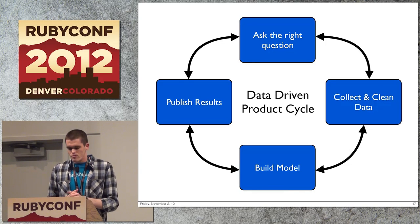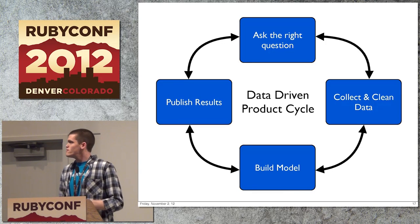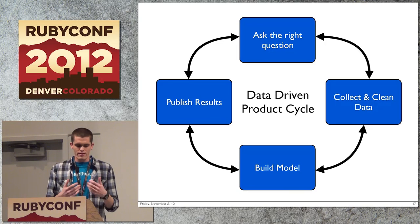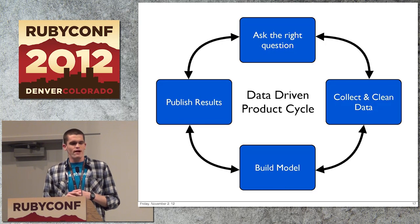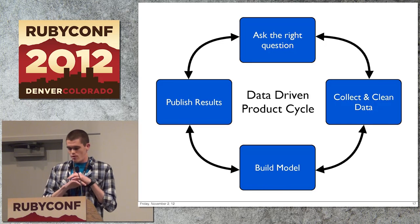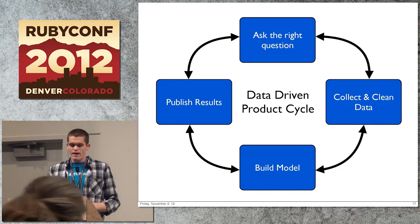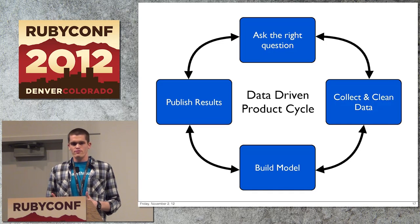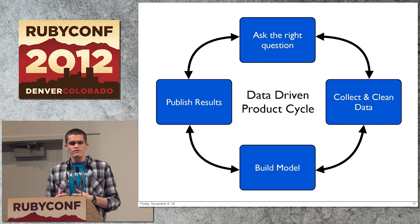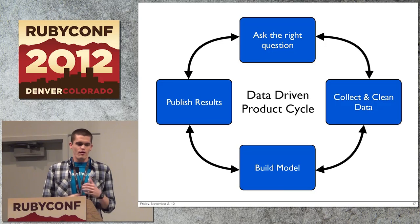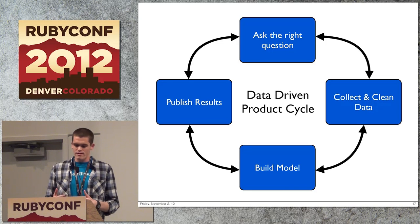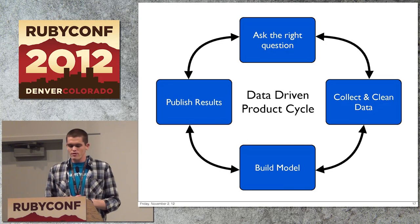To build good data products, you need this iterative cycle. You might finally get to the publish results phase, print out a graph, and then the business says, 'we've pivoted since then, so your graph has no value now.' The same thing happens when you've built the ultimate model with tons of work, and then business development signs a deal with a third party — all of a sudden you need to integrate that new data source. You'll have to go from the model-building phase all the way back to cleaning and collecting data.